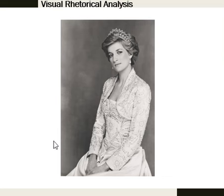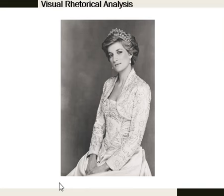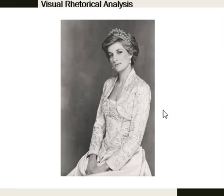Hopefully this has demonstrated how we can look at an image to see the visual rhetorical choices that the photographer, the subject, maybe one, maybe the other, maybe both, have made in order to create the photograph as a rhetorical production — in much the same way that we would analyze a piece of writing. And you saw those logos, pathos, and ethos appeals too. Ethos: credibility, approachability. The pathos of the softness and beauty that is given. I'm not seeing a lot of logos appeal in this one — we're living in the realm of emotional and ideological appeal.